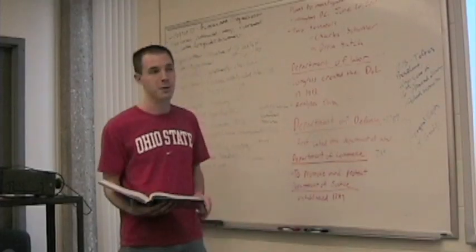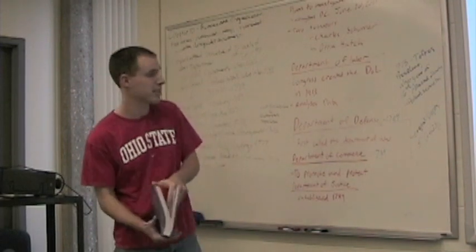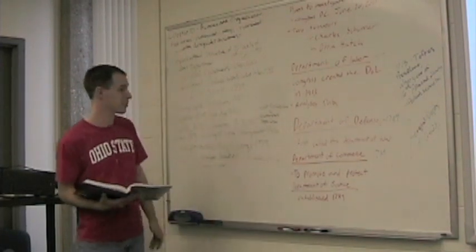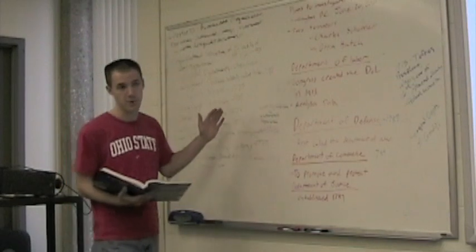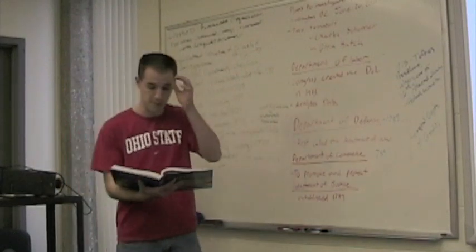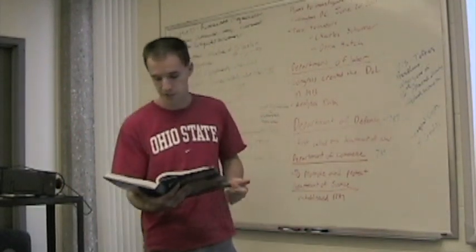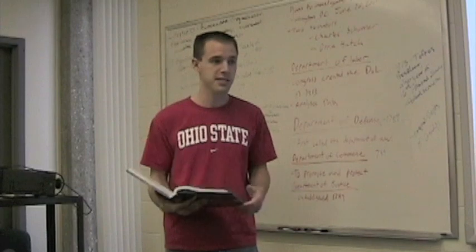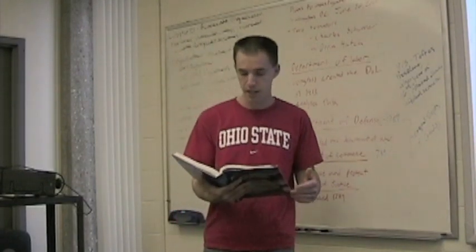Managing the monetary resources of the United States is the primary responsibility of the Department of Treasury. That's one of the first three original departments. There's the Bureau of Mint that manufactures coins, engraving and printing, which does paper money.